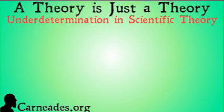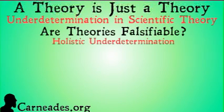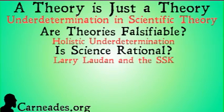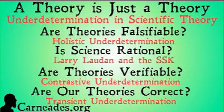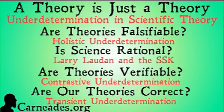So that was 'A Theory is Just a Theory' — underdetermination in scientific theory. Next up, we'll look at 'Are Theories Falsifiable?' covering holistic underdetermination. Then we'll talk about the rationality of science — is our practice of science rational or irrational? — with Larry Laudan and the SSK. Then we'll ask 'Are Theories Verifiable?' under a strict understanding of verifiable, and talk about contrastive underdetermination. And finally, we'll ask 'Are Our Theories Correct?' and talk about transient underdetermination, a type of contrastive underdetermination. Watch this video and more here at carneades.org, and stay skeptical, everybody.